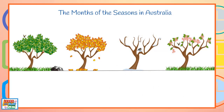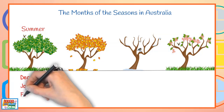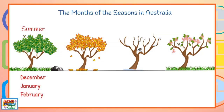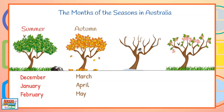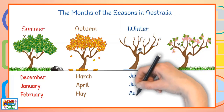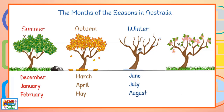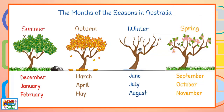Let's go through the months of the seasons in Australia. The months of summer are December, January and February. The months of autumn are March, April and May. The months of winter are June, July and August. The months of spring are September, October and November.